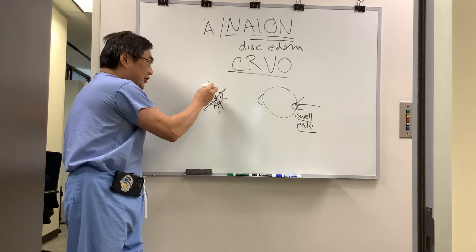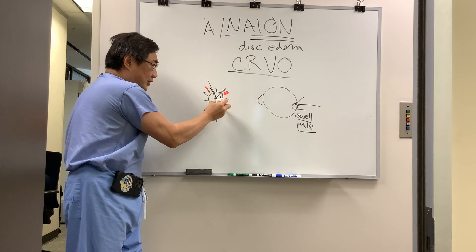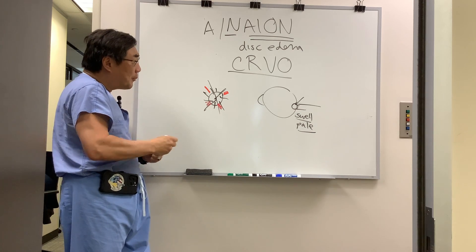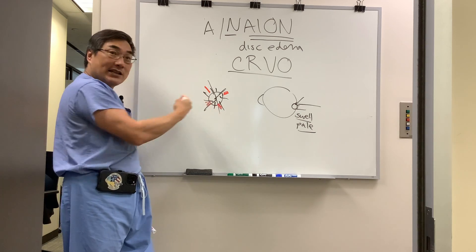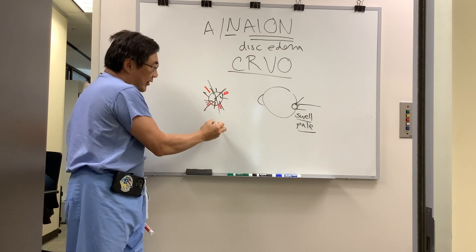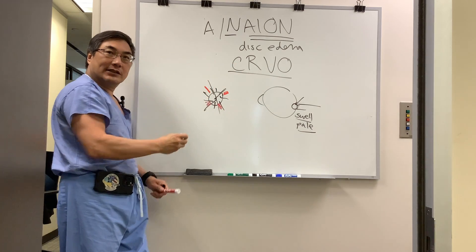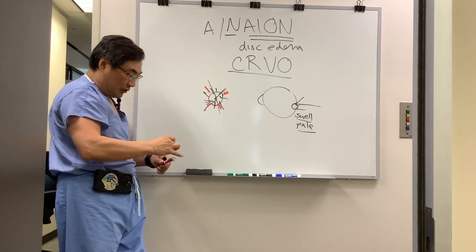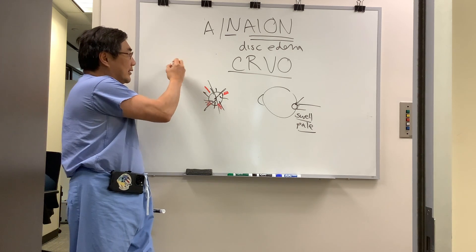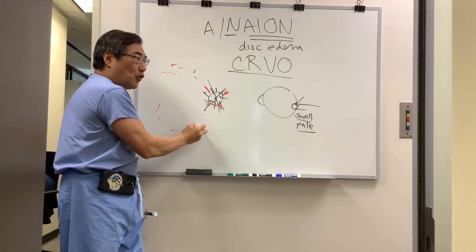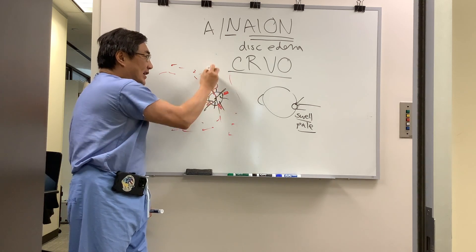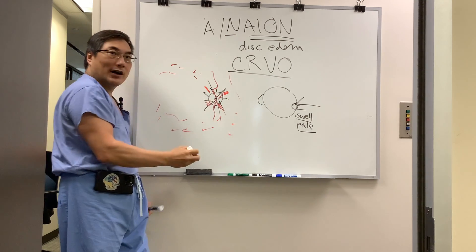Those hemorrhages are going to be flame hemorrhages or disc hemorrhages, so it could superficially look like the vein is blocked. That's because in central retinal vein occlusion, you also have disc edema and flame hemorrhages. But in a typical central retinal vein occlusion, the hemorrhages are going to be four-quadrant hemorrhages, and you're going to have venous dilation and tortuosity.